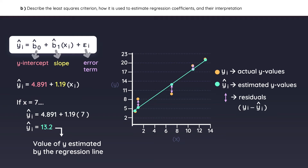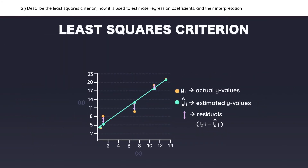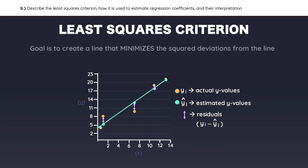The way to account for the differences between the estimated Y values and the actual Y values is by adding an error term to the equation for a linear regression. There is one last thing you must remember, called the least squares criterion. In a simple linear regression, the goal is to create a line that minimizes the squared deviations from the line — in other words, the objective is to minimize the residuals.